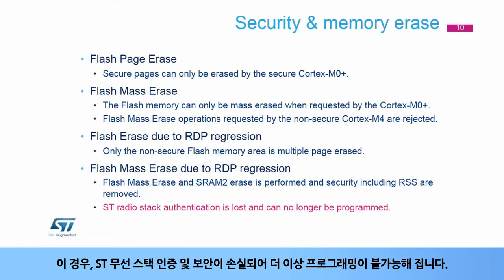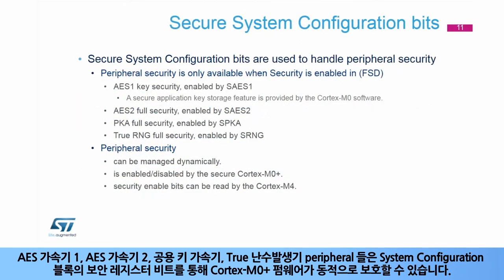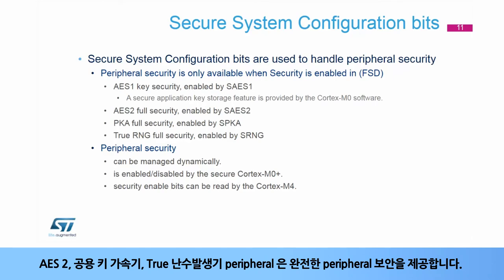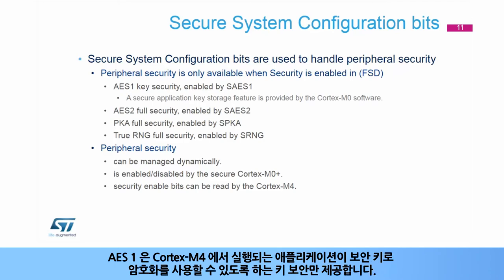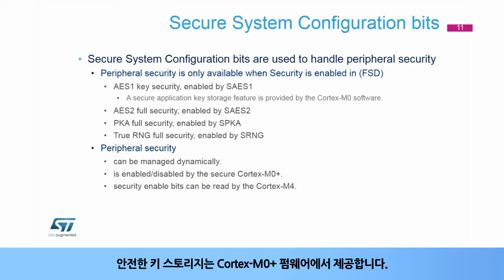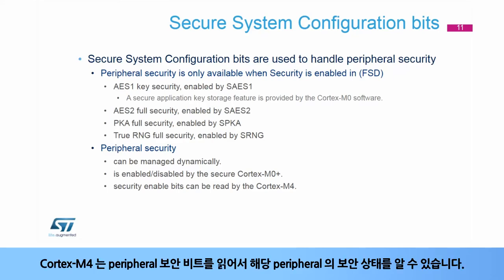The complete flash memory is mass erased and the security is removed only when regressing the read protection from Level 1 to Level 0. In this case, the ST Radio Stack authentication and security is lost and can no longer be programmed. The AES Accelerator 1, AES Accelerator 2, Public Key Accelerator, and True Random Number Generator peripherals can dynamically be made secure by Cortex-M0 Plus firmware through secure register bits in the system configuration block. The AES2, Public Key Accelerator, and True Random Number Generator peripherals provide full peripheral security, while AES1 provides only key security, allowing the application running on the Cortex-M4 to use cryptography with a secure key. The Cortex-M4 may read the peripheral security bit to determine its security status.